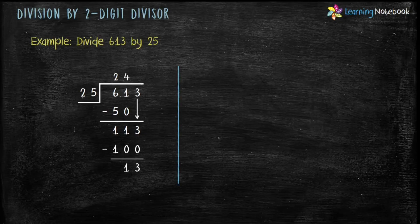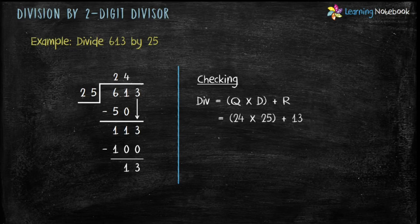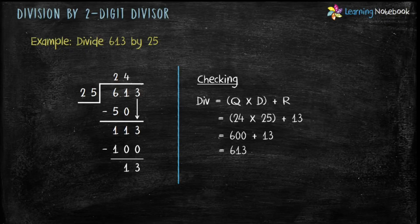Now let's check the answer. Dividend equals quotient into divisor plus remainder. Quotient is 24, divisor is 25, and remainder is 13. So we get 24 into 25 plus 13. 24 into 25 equals 600, and 600 plus 13 equals 613, which is equal to the given dividend. Therefore the answer — quotient 24, remainder 13 — is correct.